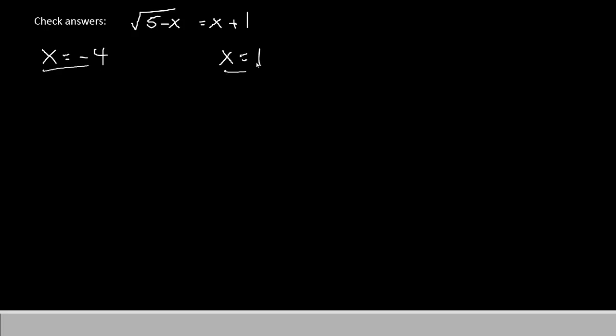Alright, here are the answers we found, negative 4 and 1. Let's go ahead and substitute the negative 4 back into the equation and see if it gives us a true statement or a false statement. We'll have square root of 5 minus negative 4 equals negative 4 plus 1. If we simplify, 5 minus minus 4 is the same thing as 5 plus 4. That's square root 9. Negative 4 plus 1 gives us negative 3. If we operate the square root, the square root of 9 is positive 3. So, the statement we end with is 3 equals negative 3, which is definitely false. That tells us that negative 4 is not a correct answer for this problem.